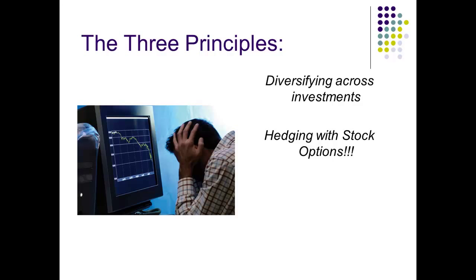Unlike stop losses, when you hedge with stock options you can actually put a maximum risk on your portfolio — you can be 100% sure that even if the market crashes tomorrow and everything goes to zero, you won't lose more than your set limit. So if you're only willing to lose half of your $10,000 portfolio, you can ensure that if the market crashes tomorrow, your portfolio will be worth $5,000. Finally, there's diversifying across time, which is something nobody really talks about. The stock market is two-dimensional — time is involved, and there are ways to diversify across it.